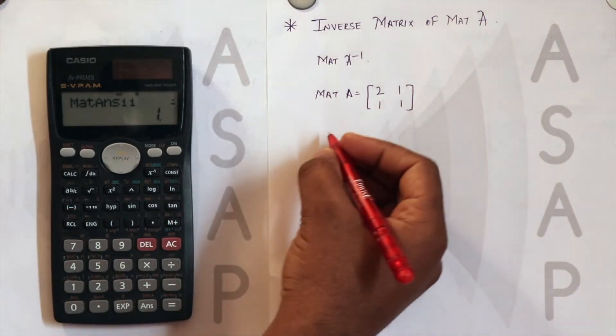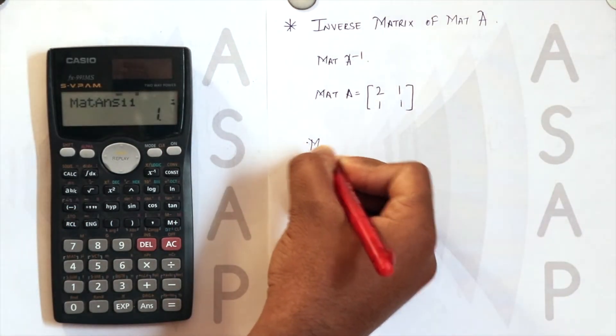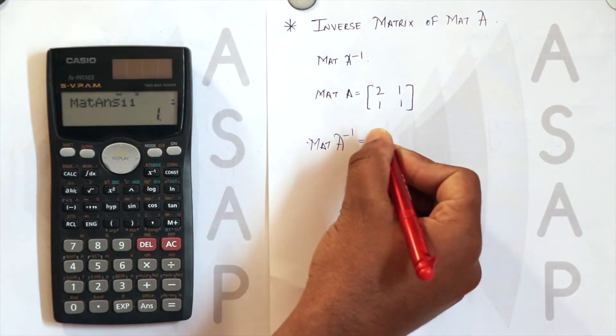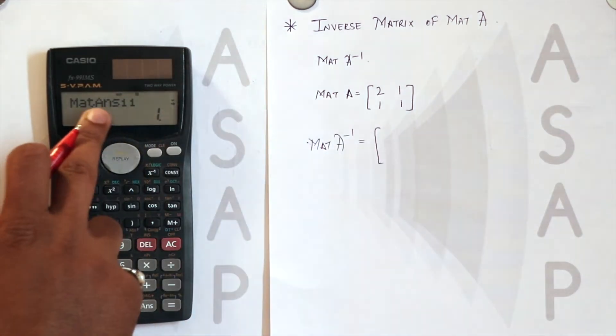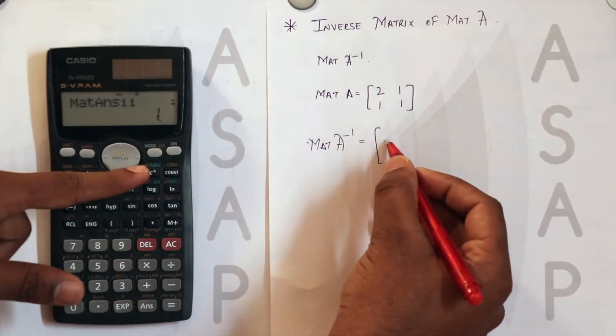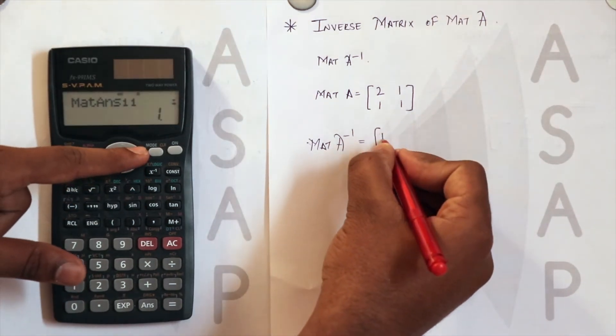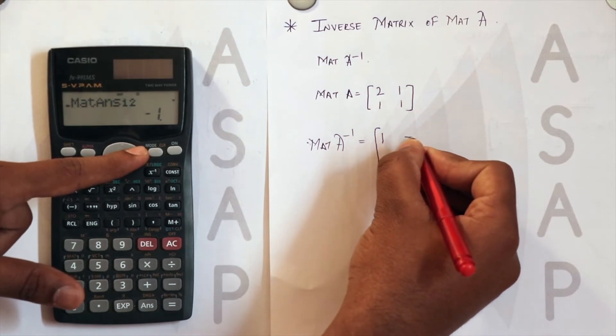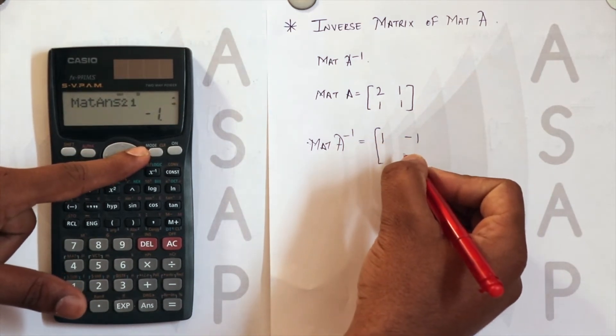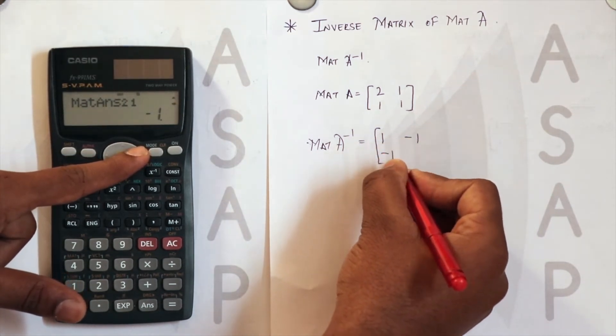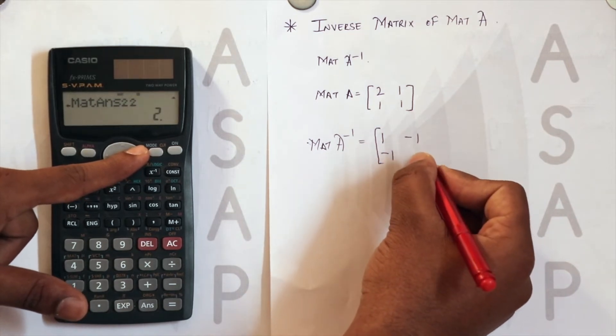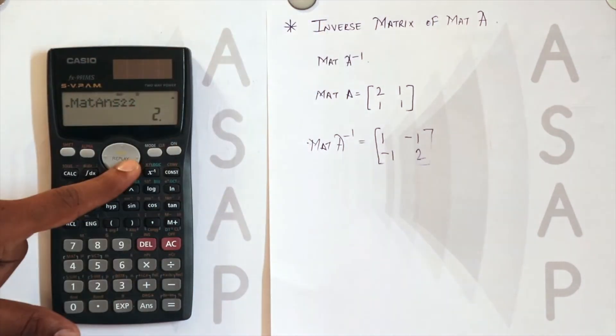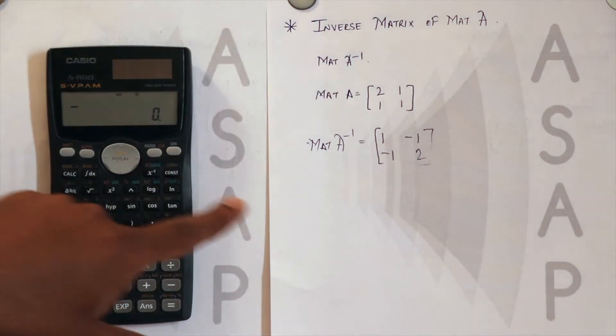I'm just writing here the answer. A(1,1), first row first column position, which is 1. A(1,2), first row second column, that is minus 1. A(2,1), that is minus 1, and A(2,2), that is 2. So we can see the inverse of the matrix, the result is 1, minus 1, minus 1, and 2.